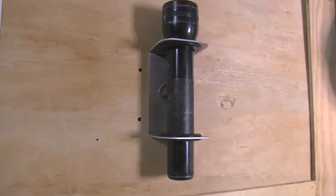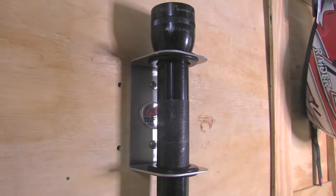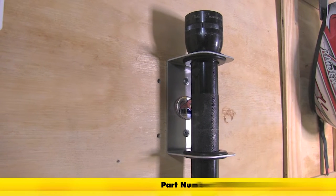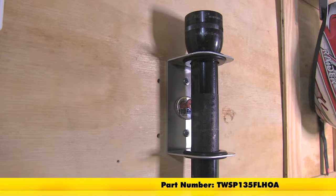And with that, that'll do it for our quick look of the Torax aluminum flashlight holder, part number TWSP135FLHOA.